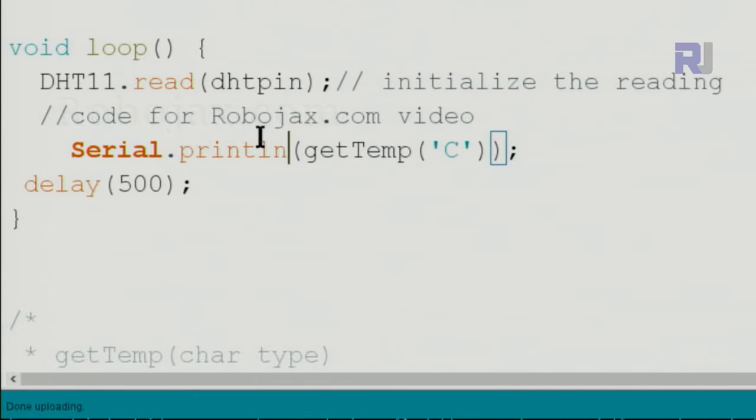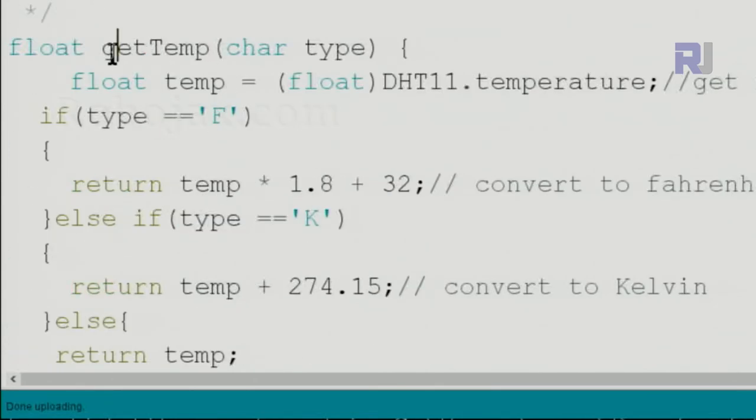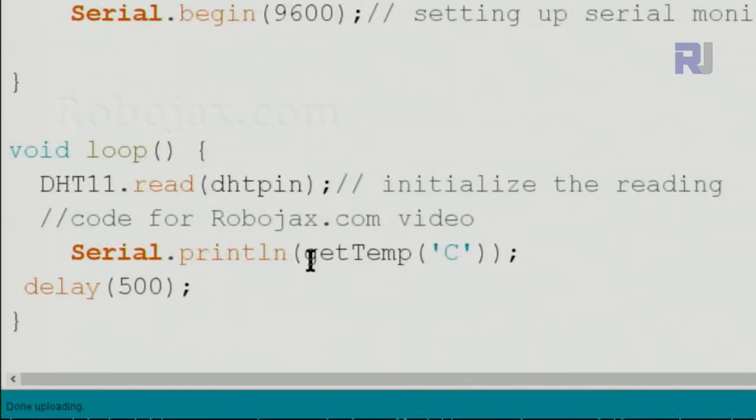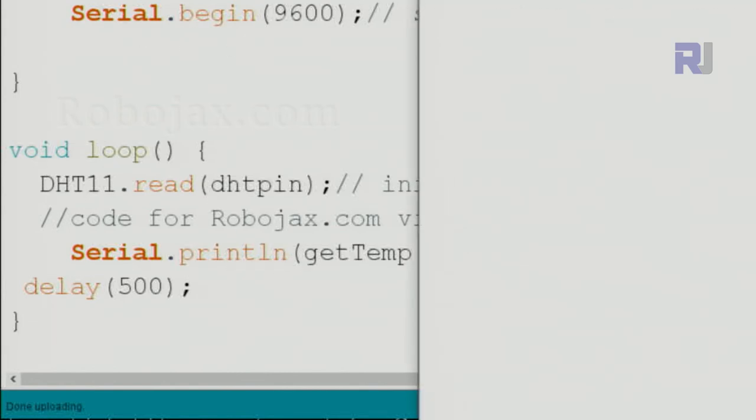Now this is the code that is using the function that I have written at the bottom. To read the temperature just say get_temp with capital T, and inside this single quote which is a character, just pass C for Celsius, F for Fahrenheit, and K for Kelvin, and it will give you the temperatures as I'm going to show you now.